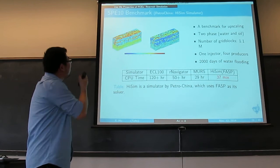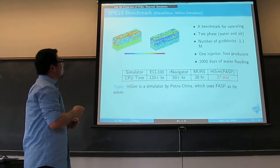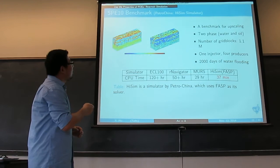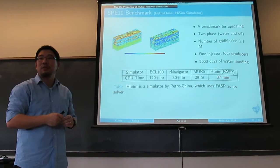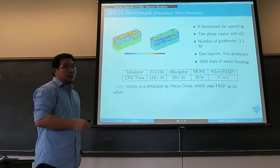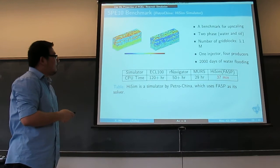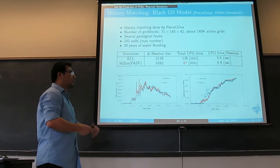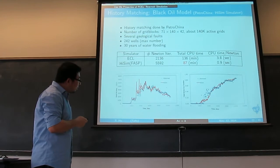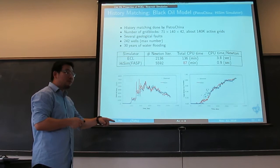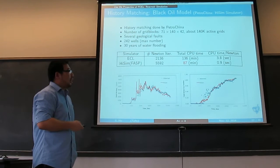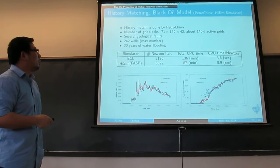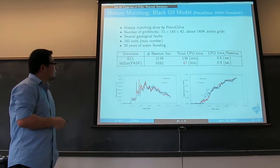Here is an SPE benchmark — a man-made problem combining two different reservoir layers to make it difficult to solve. Our result shows we can solve it in about half an hour, while commercial software takes much longer. For history matching, our collaborators provide observed data (blue dots), and we run simulations to match it — not perfect but the collaborators accepted the difference. Our simulation time is faster than commercial software.